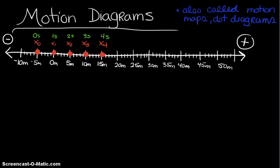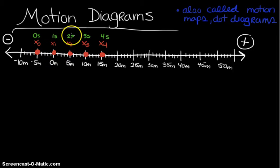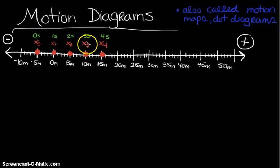Each of these positions represents the position of the object at a particular clock reading. Most of the time when you construct a motion diagram, the time interval between each position will be one second, and that's exactly what I did here. The zero second clock reading appears at x initial, then one second later the object is at the zero meter mark, two seconds later at the five meter mark, three seconds later at the ten meter mark. Notice that the subscripts for your positions match the actual clock reading, which is why we start with x sub zero.